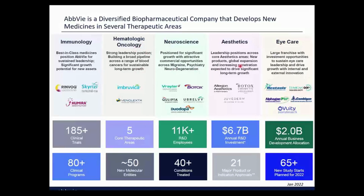The other therapeutic areas in which we work are oncology, neuroscience, aesthetics, and eye care. You're probably familiar with AbbVie's BCL2 inhibitors and a covalent BTK inhibitor. Products in the neuroscience and eye care business were acquired when we bought Allergan. This diversified our portfolio away from a very immunology-centric revenue stream. To support all this, we spend about $6.7 billion annually on R&D, with about 11,000 employees in research and development.